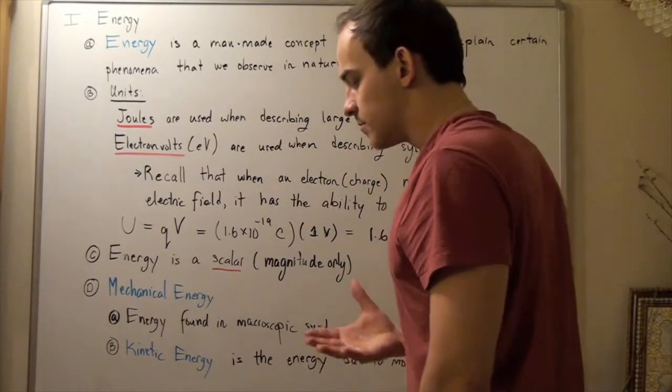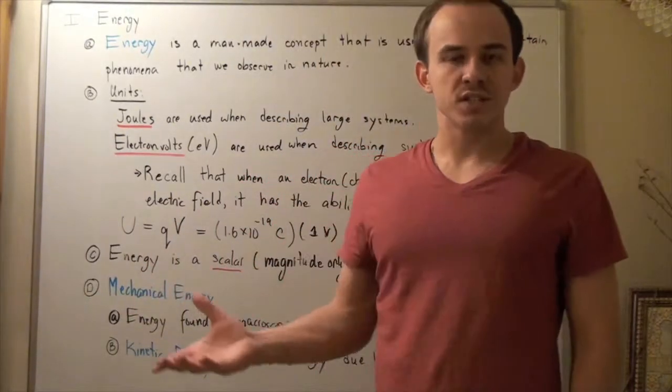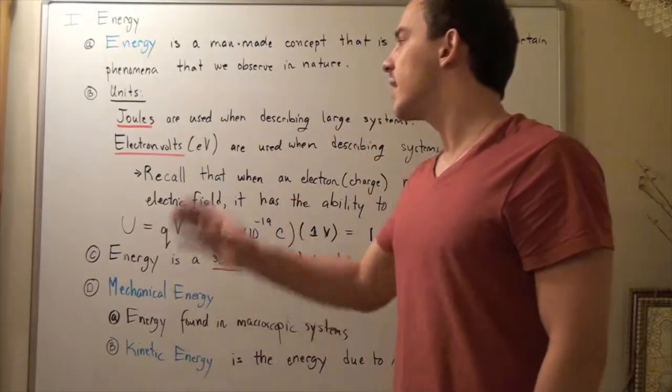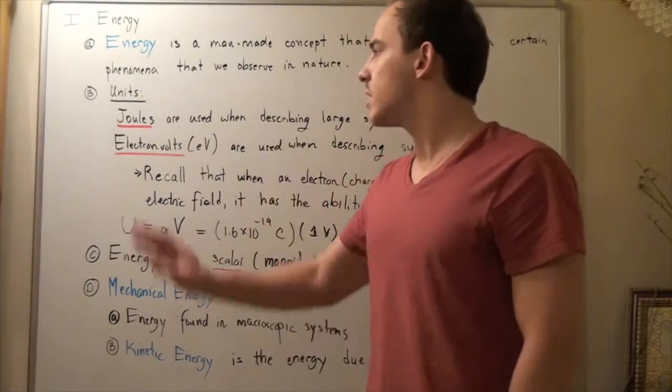Now, electron volts or eV are used when describing systems on the atomic scale. So, microsystems such as atoms and compounds and molecules, electrons and protons and neutrons, these guys are all described using electron volts. These are simply very, very small units of joules.